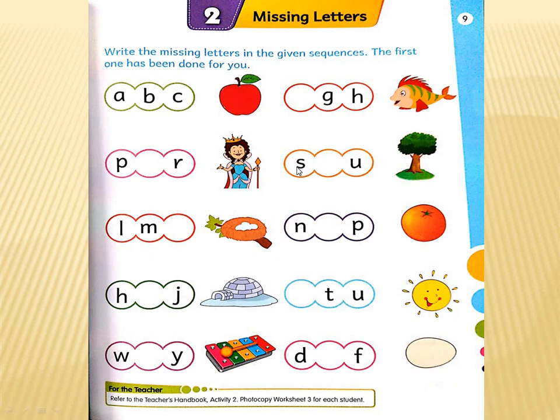Now come to this one. S blank U. What is this? Which picture is this? It's a picture of a tree. What is the beginning letter of tree? T. What we will write here? T. S T U. From the pictures we are finding the missing letters. With the help of these pictures we can easily find the missing letters. S T U.